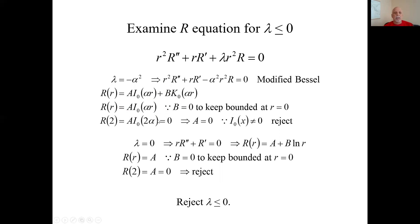At r equals two, the function equals this and the boundary condition says it's zero. Well, I sub zero is never zero. So we have to set A to zero again, which gives us a trivial solution and we reject negative lambdas.